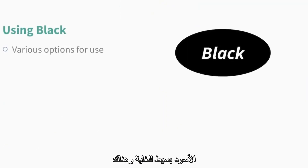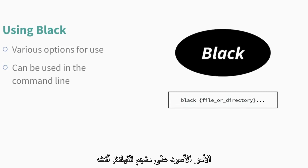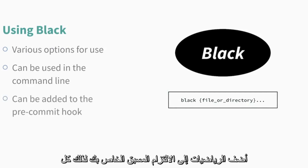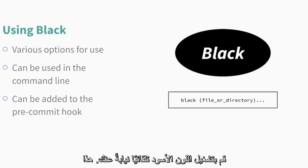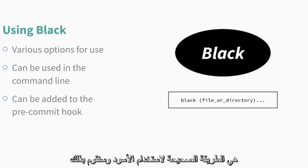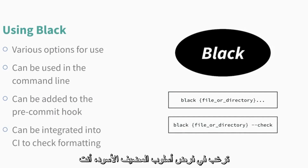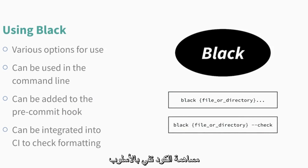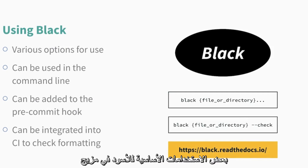Using Black is super simple and there are multiple ways of using it. First and most straightforward is to ask Black to format your code manually via the Black command in the command line. You can choose to format a single file or everything under a directory. Or you can add Black to your pre-commit hook, so every time you try to commit your code it will run Black automatically for you. Last, if you have a project and would like to enforce the Black code style, you can add a check in CI to make sure code contributions follow the style format.